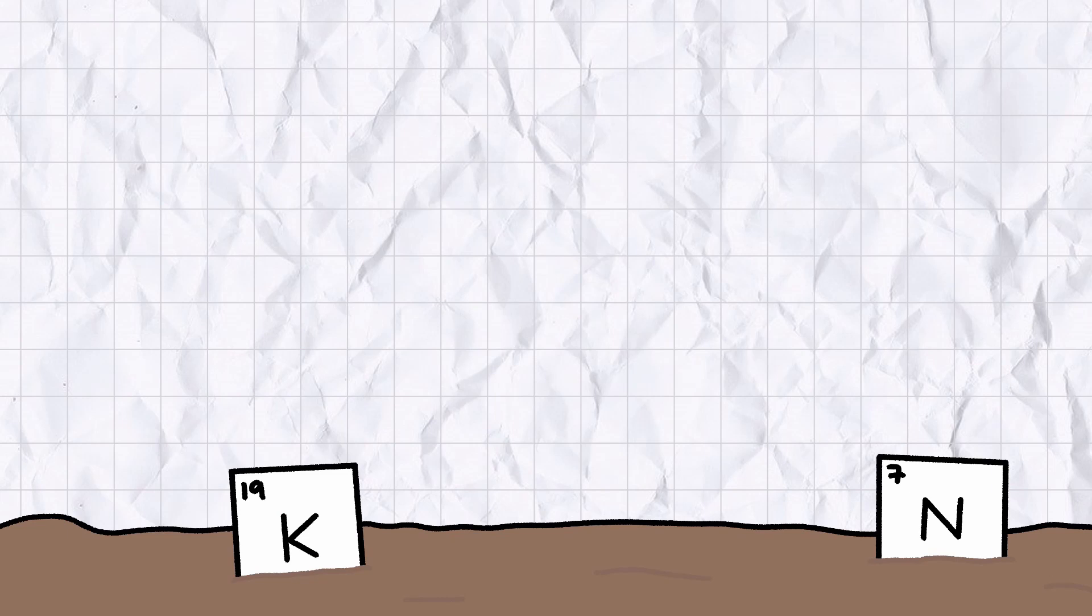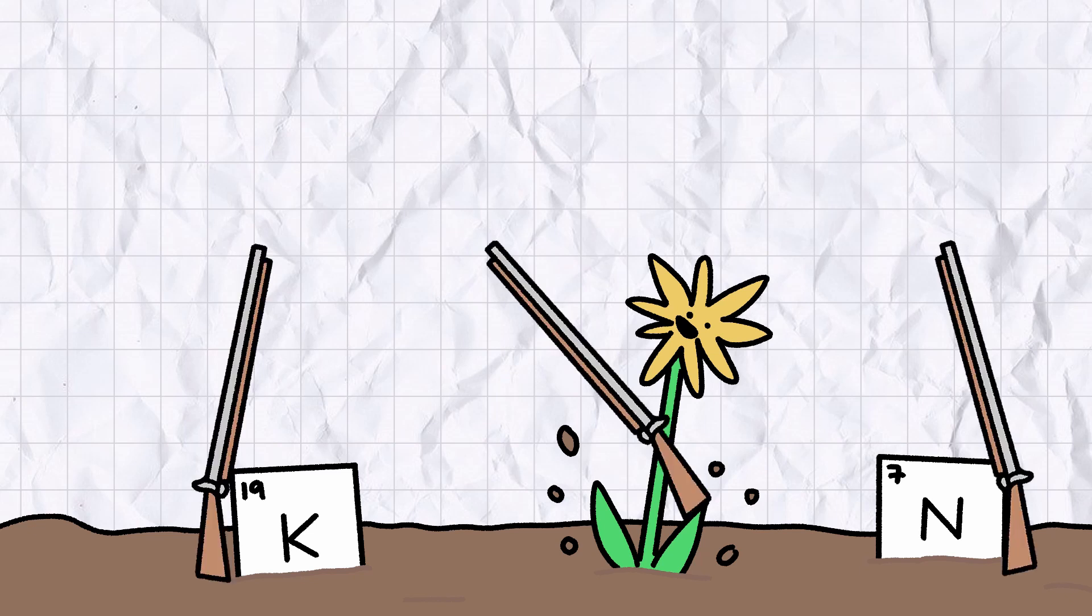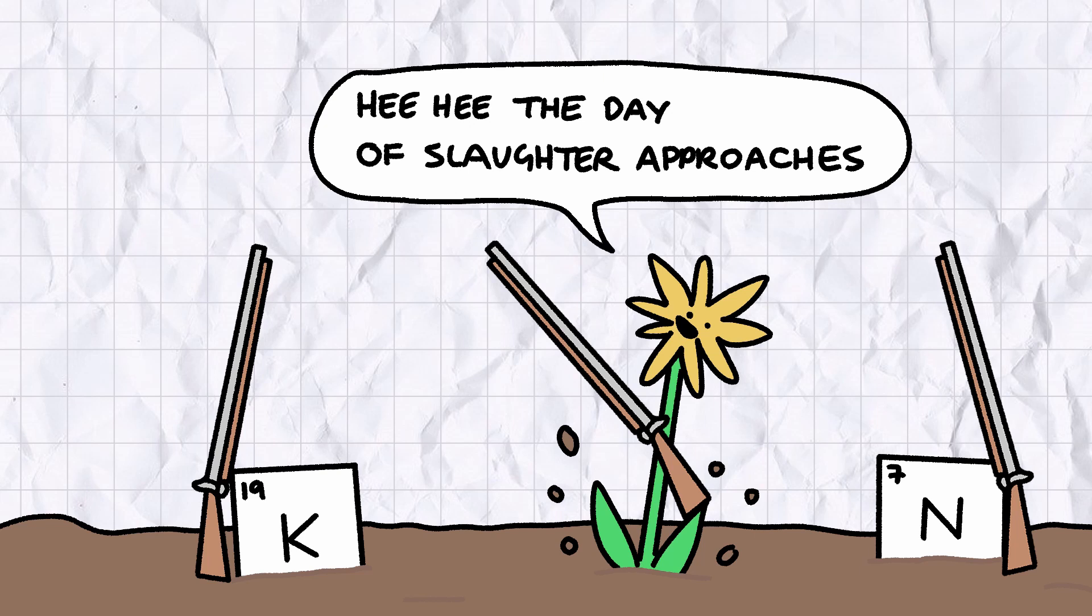Potassium and nitrogen are key nutrients in plants, making saltpetre a highly effective fertilizer. But until the mid-19th century it was also the primary component of gunpowder, making it an extremely valuable resource in times of war.